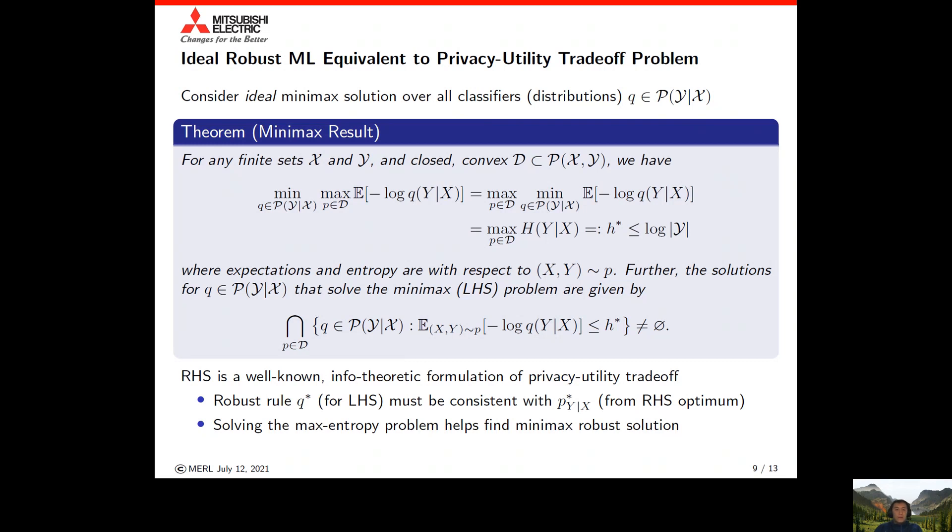Further, by solving this max entropy problem, this helps us find solutions for the original min-max problems. The solution set can be characterized by this expression at the bottom, which looks complex but essentially says the robust rule has to be consistent with the posterior implied by the worst case perturbations that solve the maximum conditional entropy problem. The complexity arises because perturbations do not necessarily have full support over the whole set, hence decision rules don't necessarily have to be uniquely defined on off-support parts.